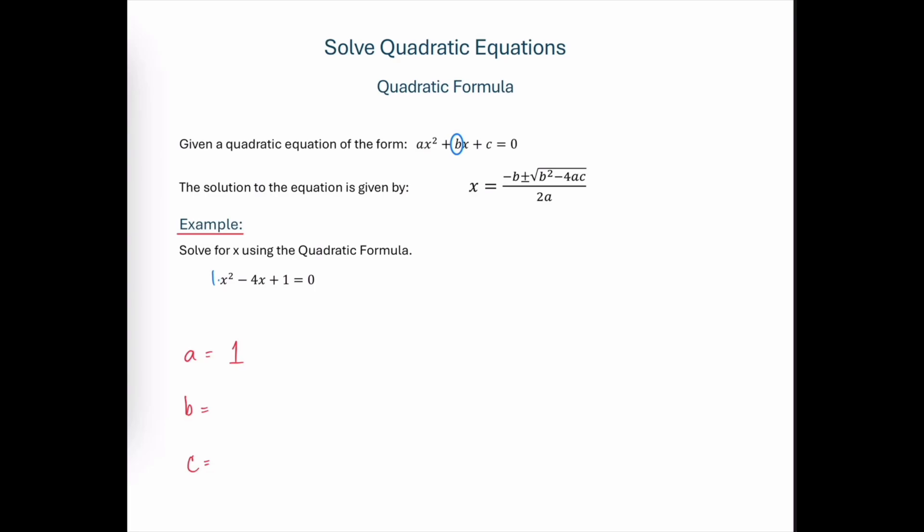b is the coefficient on the x term, and in this case, our b coefficient is negative 4, so that's the quantity that we're going to use for b.